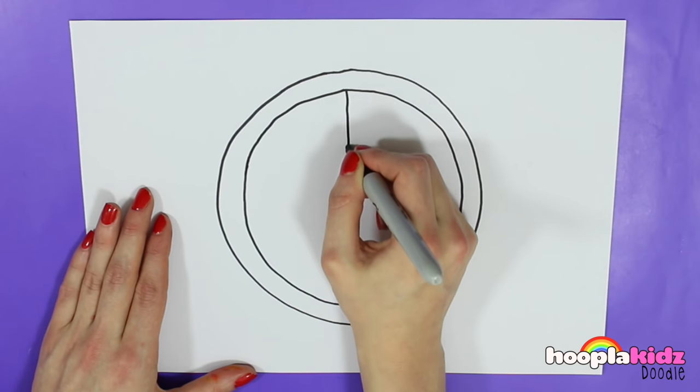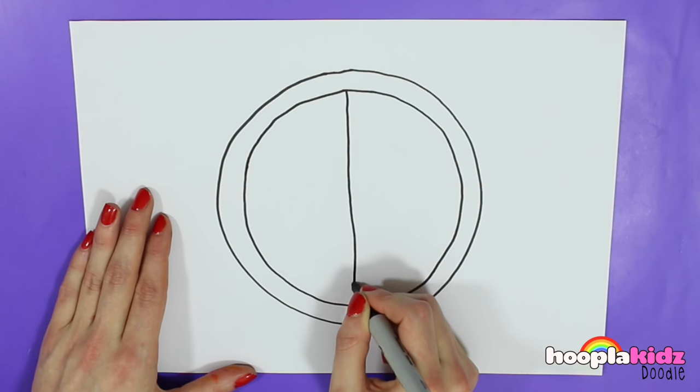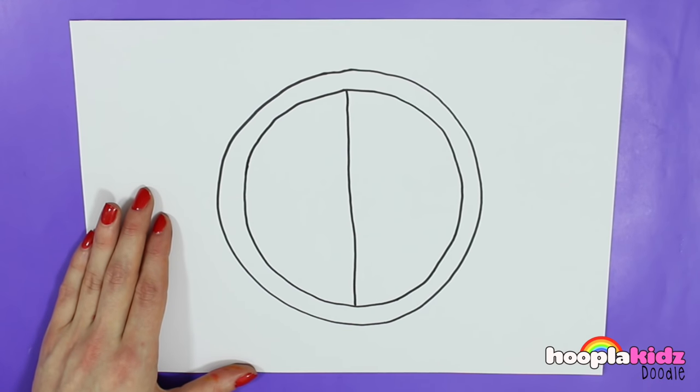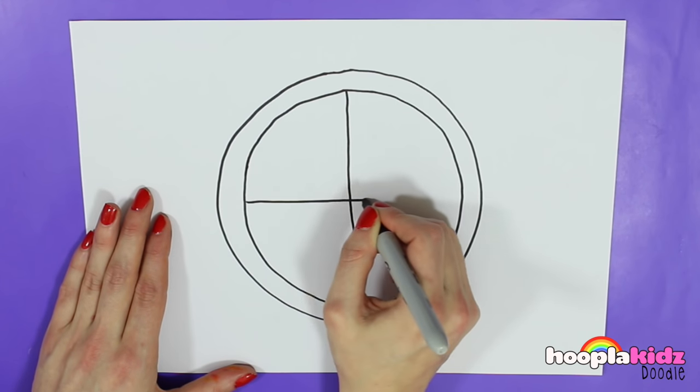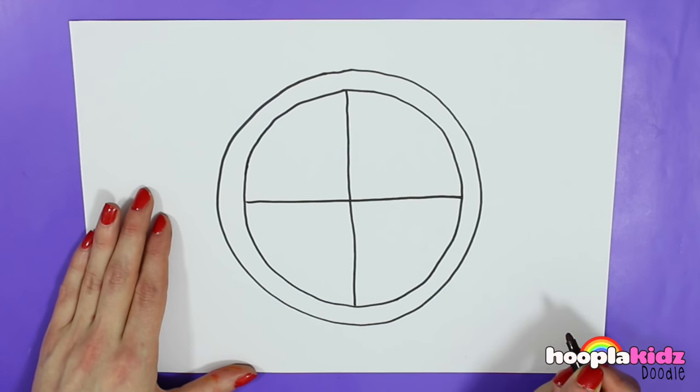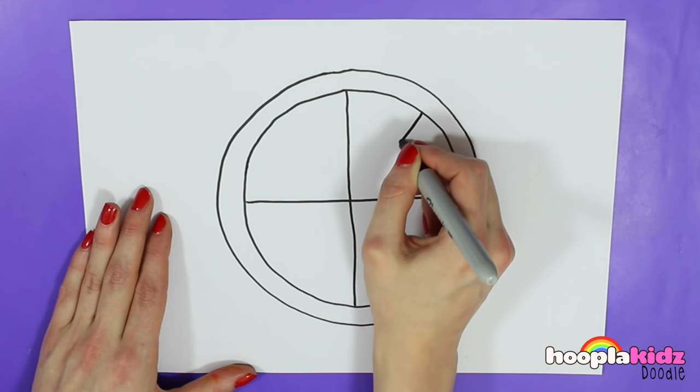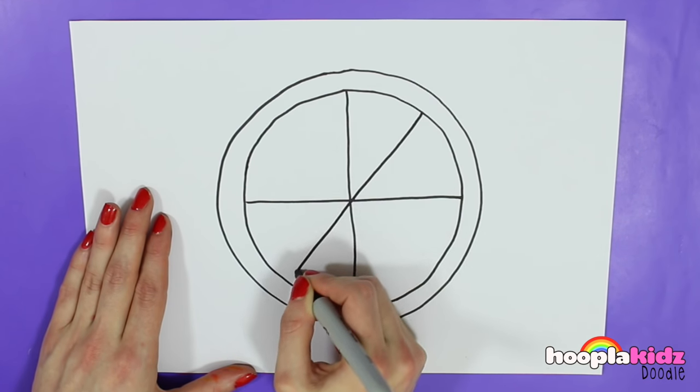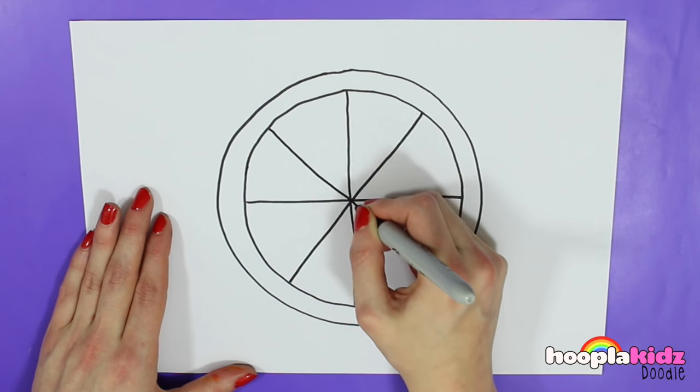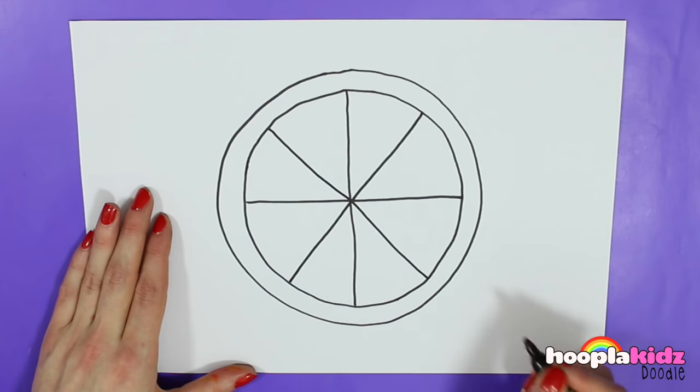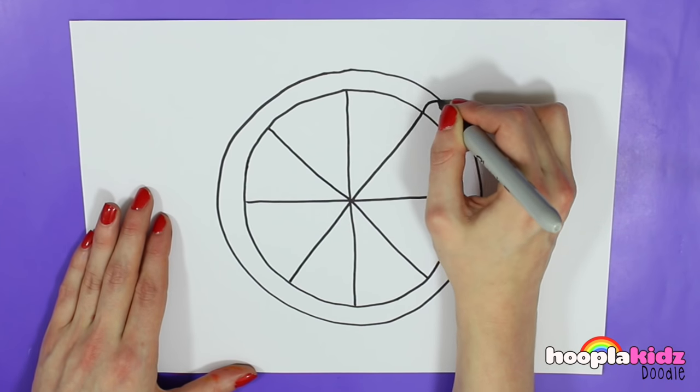Now we're going to draw some straight lines from one side of the inner circle to the other just like this. There we go, we've got a cross, and depending on how many slices we want, we're going to draw some more lines. I've decided here to have eight slices of pizza.